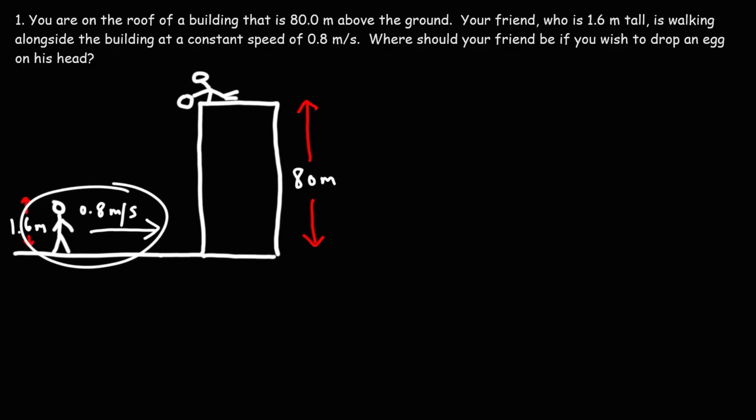So your friend is moving at a constant speed of 0.8 meters per second to the right. So for constant speed, we have this equation, d is equal to vt.